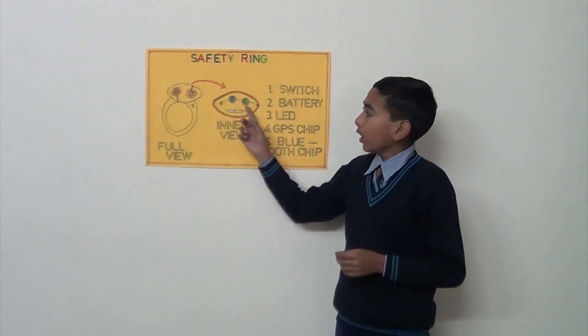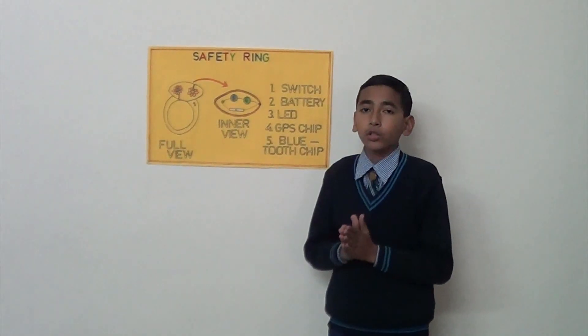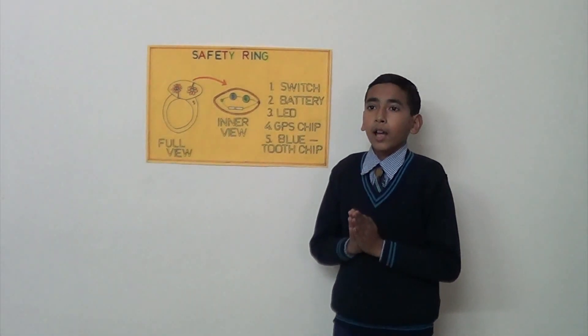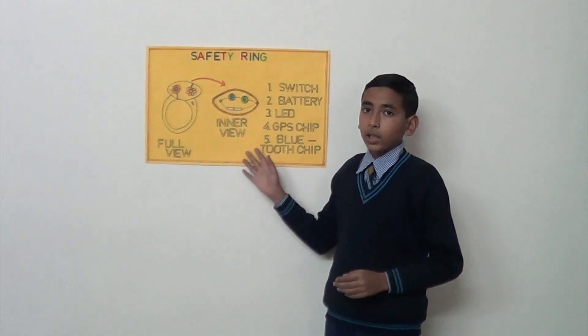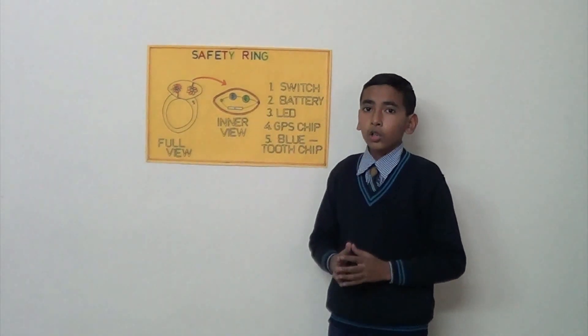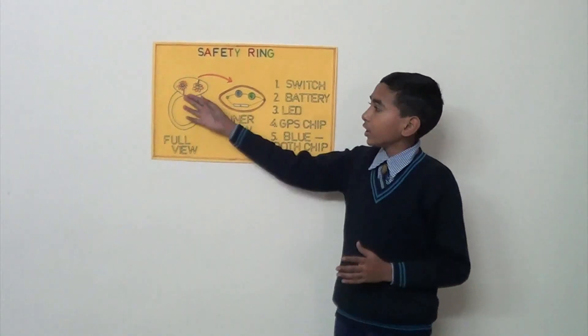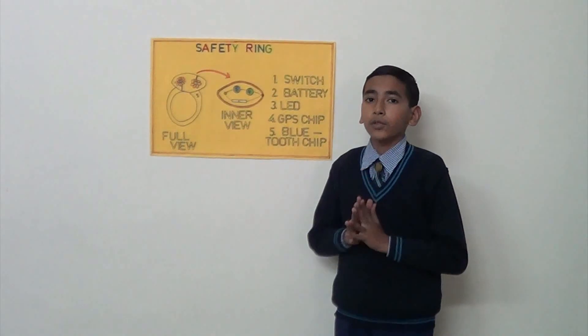This will help send a trigger call to the police station. Using the location of the user, the police can come to the spot to help the victim. Every registered link also has a phone number of the user.